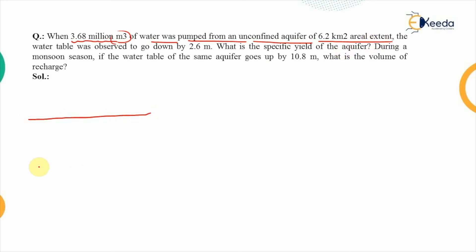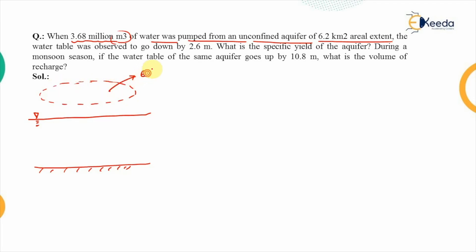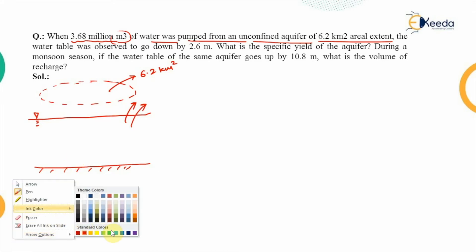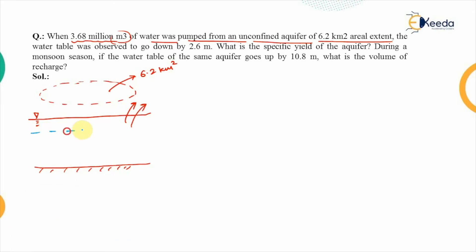Problem 2: When 3.68 million cubic meters of water was pumped from an unconfined aquifer of 6.2 square kilometer aerial extent, the water level dropped by 2.6 meters. We need to calculate the specific yield of the aquifer.